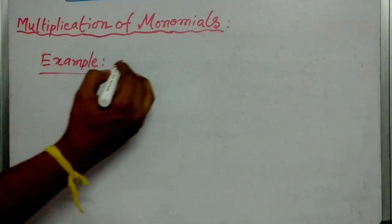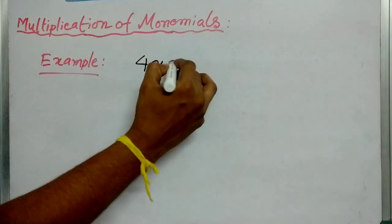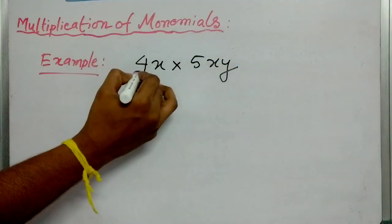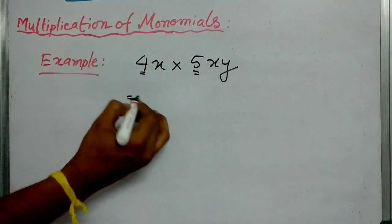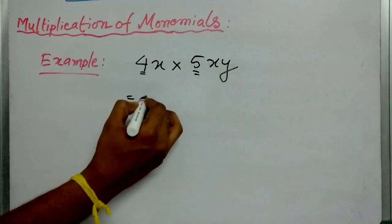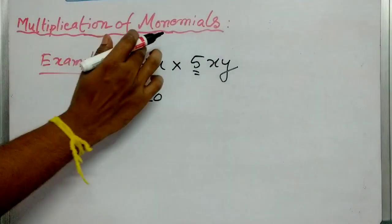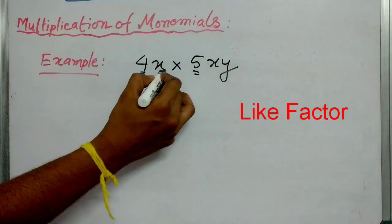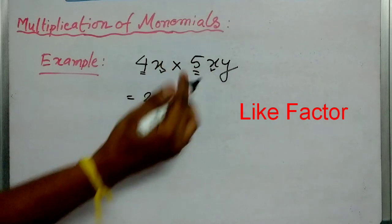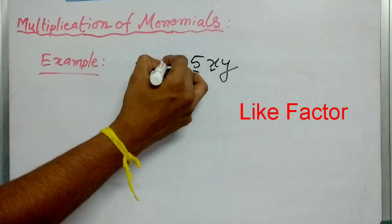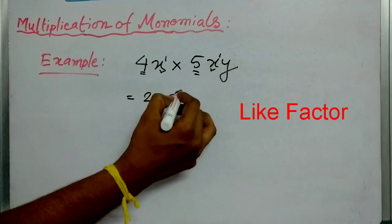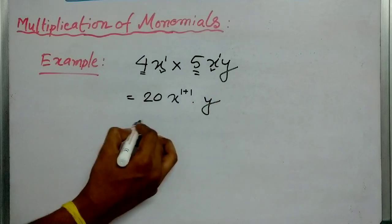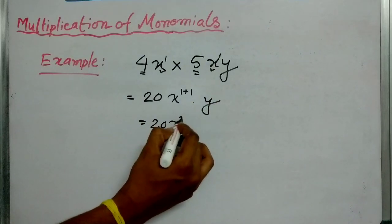Let's go for an example: 4x into 5xy. Here 4 and 5 are constant terms; they will be multiplied together first. So 4 into 5 is 20. The like terms are x and x — each has power 1, so 1 plus 1 gives x squared, and y is left alone. The answer will be 20x squared y.